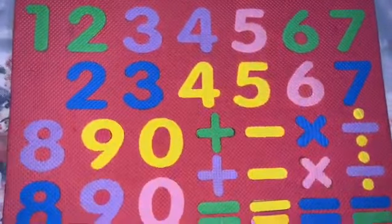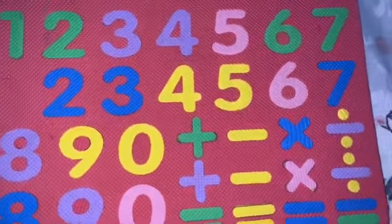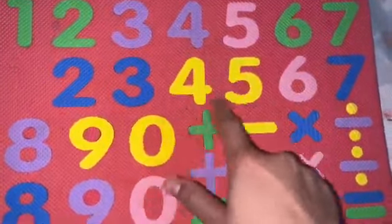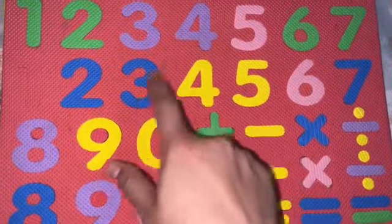The next question is, what comes between 3 and 5? So 3 and 5. And what comes between 3 and 5? 4 comes between 3 and 5.